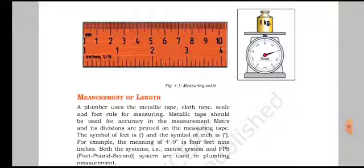For example, the meaning of 4 single inverted comma, 9 double inverted comma, is 4 feet 9 inches.